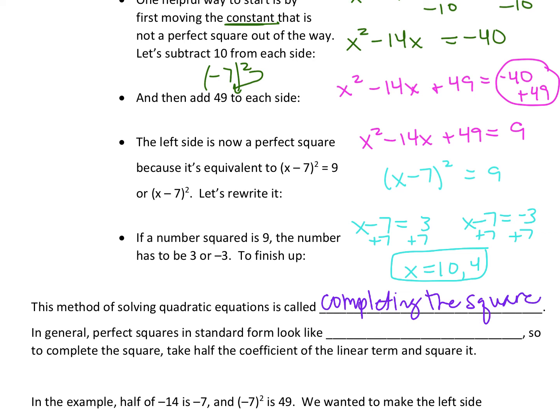In general, perfect squares in standard form look like x squared plus bx plus b over 2 squared. So to complete the square, take half the coefficient of the linear term and square it. So you guys are going to have the squared term and the linear term. To finish off completing the square, whatever your linear term is, that coefficient, if you divide it by 2 and square it, that's how you get that third term.